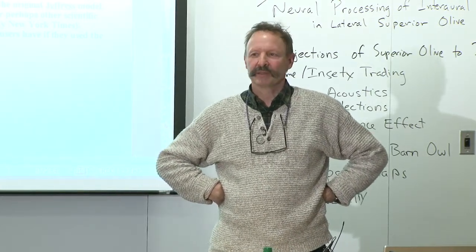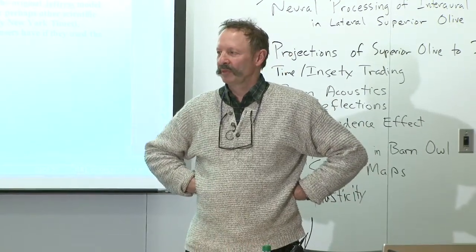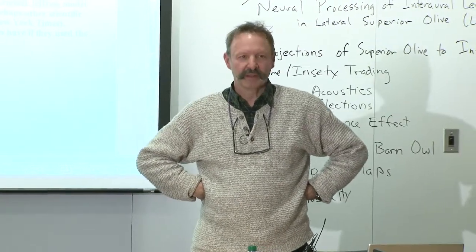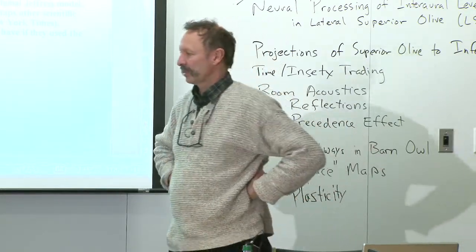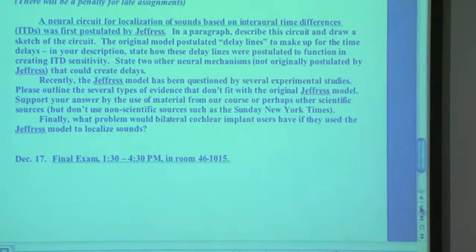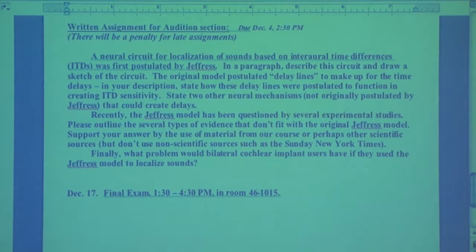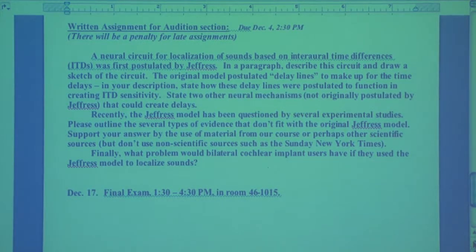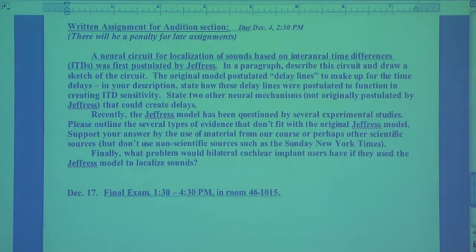We talked about the Jeffress model and how it can help recreate a neural mapping that has ITD sensitivity. That's the subject of the assignment for this year. The first paragraph of the assignment is basically the lecture and the sketch of the Jeffress model, except that these days people are thinking that axonal delay lines are not how the delay is created in the medial superior olive. So I ask you for two other possible neural mechanisms that could create delays.